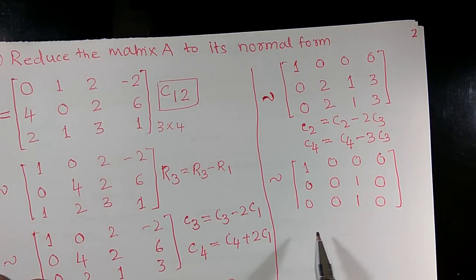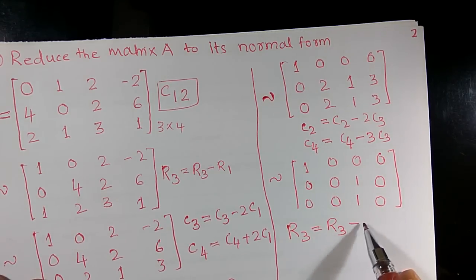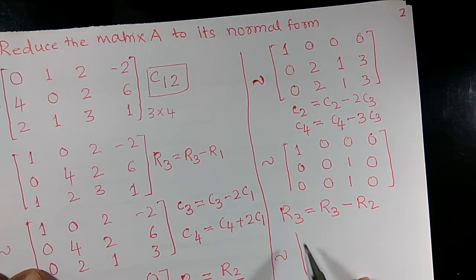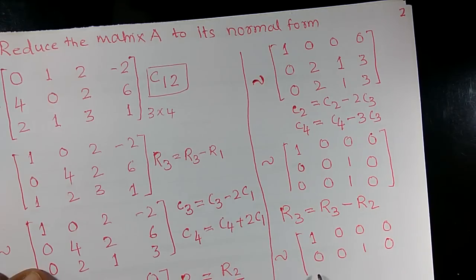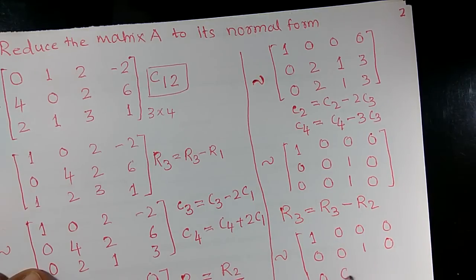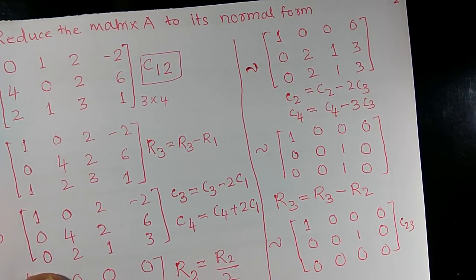Now I apply R3 = R3 − R2. The first and second rows remain as they are. For R3: 0−0=0, 0−0=0, 1−1=0. So the third row becomes all zeros. Now interchanging columns 2 and 3, I obtain: first row [1,0,0], second row [0,1,0], and third row [0,0,0].